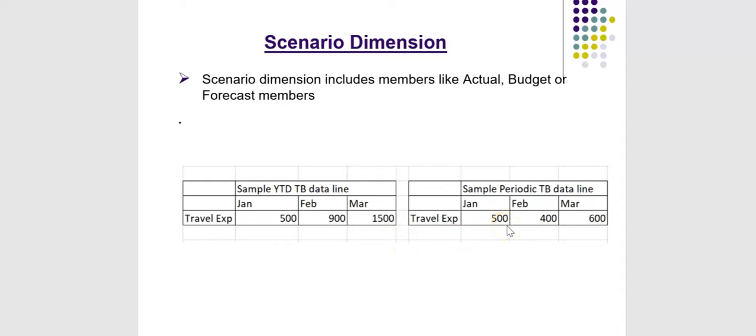In the periodic trial balance, these values represent expenses for this particular account that occurred in that specific month. The value of $500 is travel expense in January alone, and $400 in February means the expense occurred in February alone. In HFM, it is possible to load either periodic trial balance or YTD trial balance.